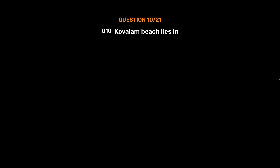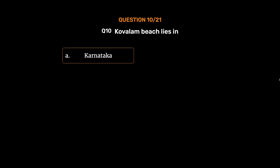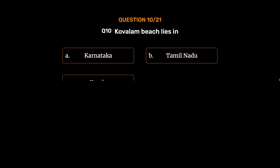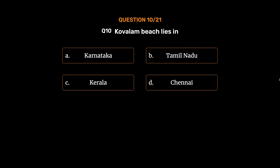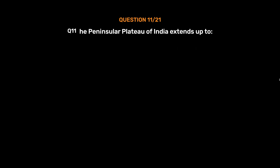Question number 10: Kovalam Beach lies in — Option A: Karnataka. Option B: Tamil Nadu. Option C: Kerala. Option D: Chennai. The correct answer is Option C, Kerala.